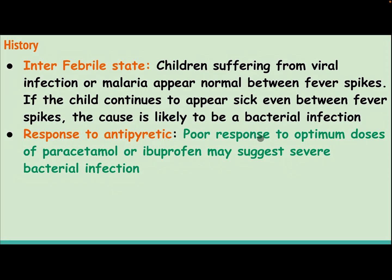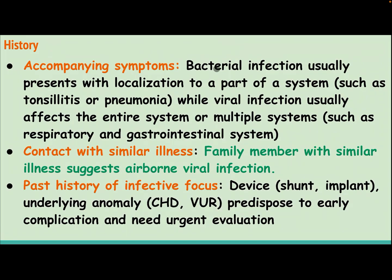Poor response to optimal doses of paracetamol or ibuprofen may suggest severe bacterial infection. Bacterial infection usually presents with localization to a part or system, such as tonsillitis or pneumonia, while viral infection usually affects the entire or multiple systems. Family members with similar illness suggests airborne viral infection. Past history of infective focus, device, shunt, implant, underlying anomaly, or congenital heart disease predisposes to early complications and needs urgent evaluation.